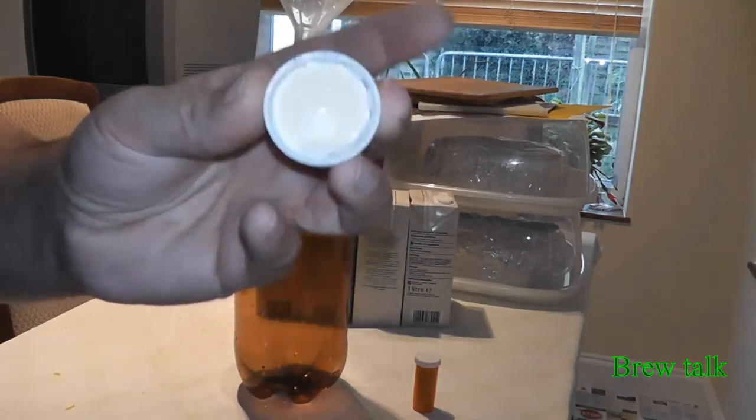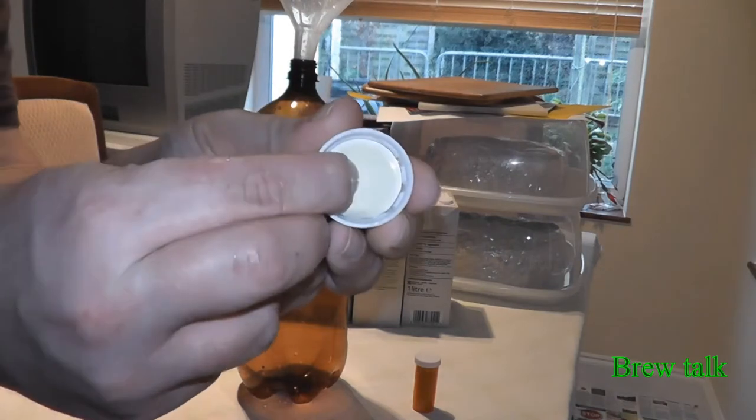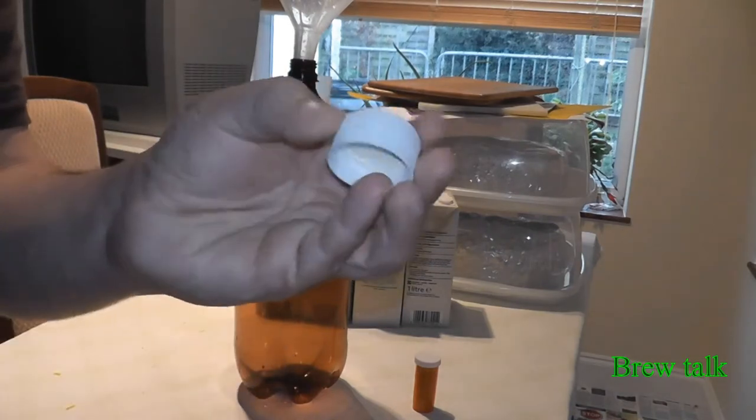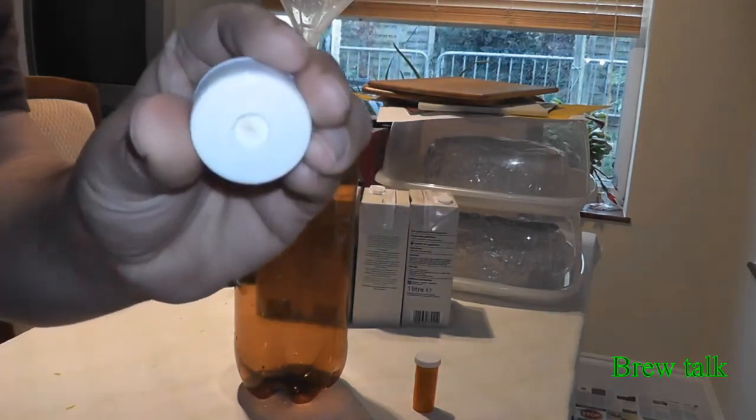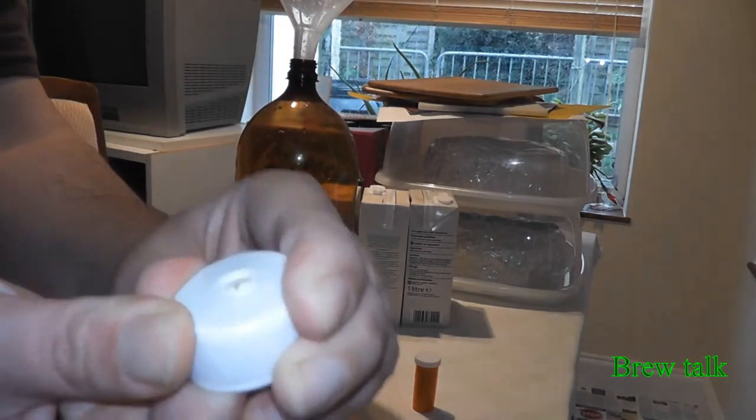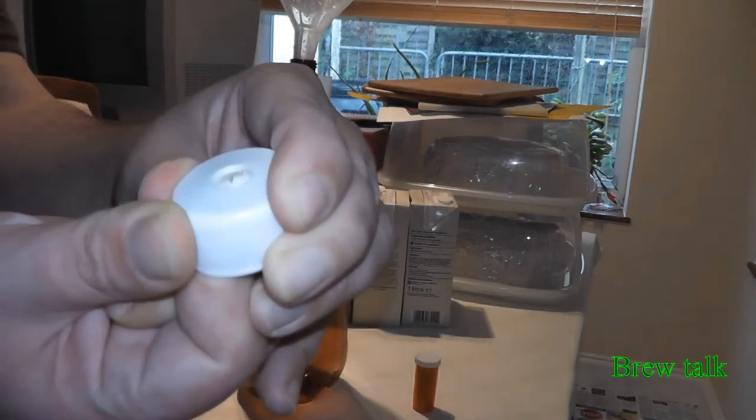Inside the cap, there's a neoprene latex rubber. On the top side, there's a slit. You push it up, you see it bulges out and opens up and releases excess CO2.